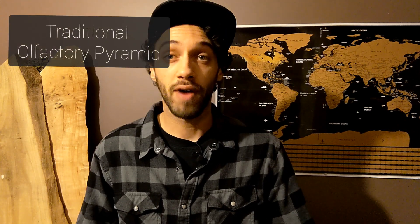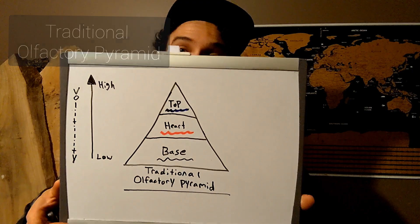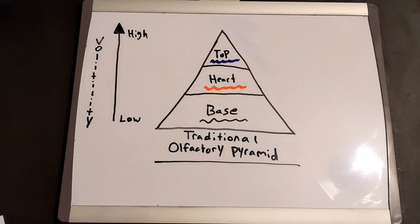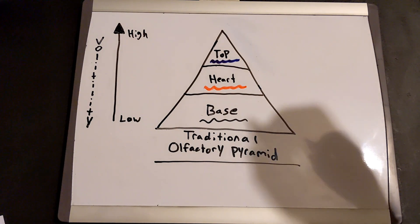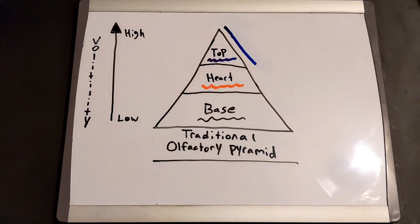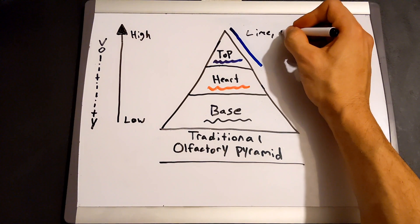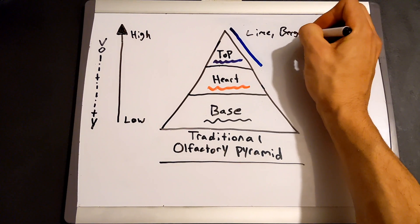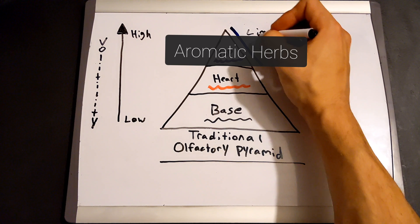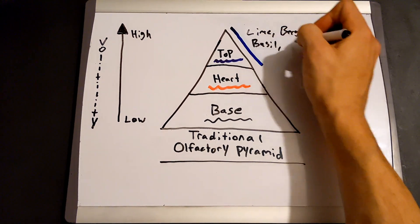We'll start with the traditional olfactory pyramid which consists of the top, heart, and base. Here we have the top or head notes of your fragrance. These are the first notes smelled after applying a personal fragrance. They are also the most volatile compounds with the lowest molecular weight, which means they evaporate very quickly. They have a short life cycle but they are the key to first impressions. Here you'll see citrus notes like lime and bergamot, or aromatic herbs like basil and lavender.